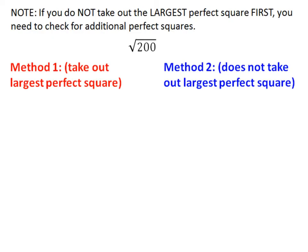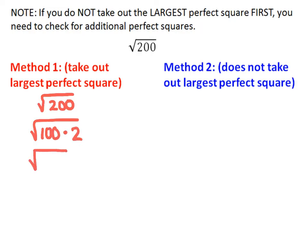Traditionally, we want to take out the largest perfect square, which is what we do in method 1. If I were to simplify the square root of 200, the largest perfect square I would divide by is 100. So I could rewrite it as 100 times 2, split it up so it's the square root of 100 times the square root of 2, and the square root of 100 becomes 10. So it's 10 square root of 2.